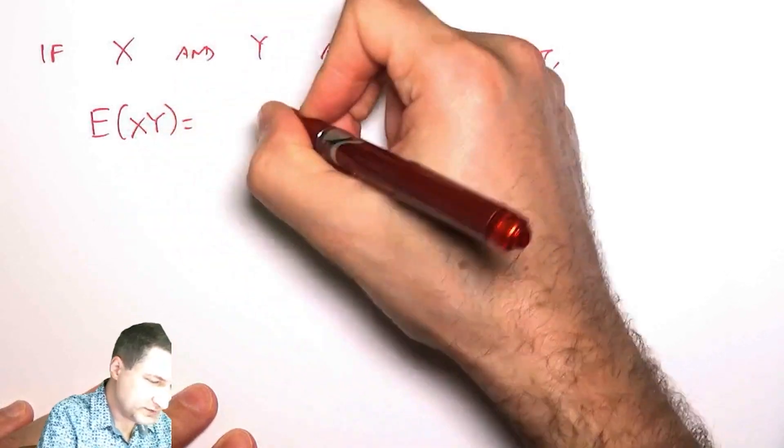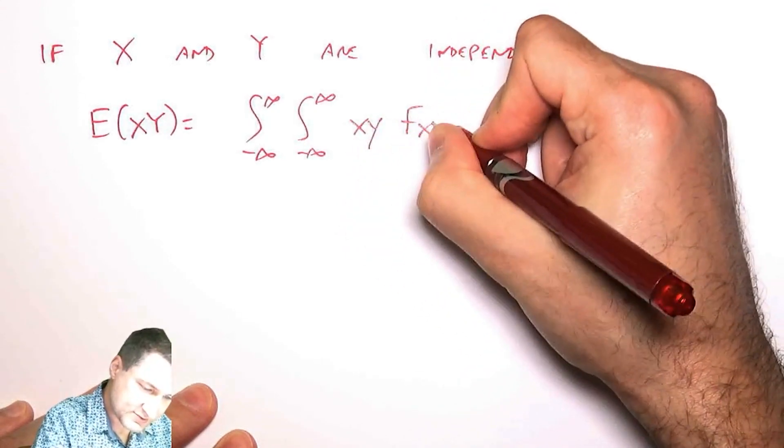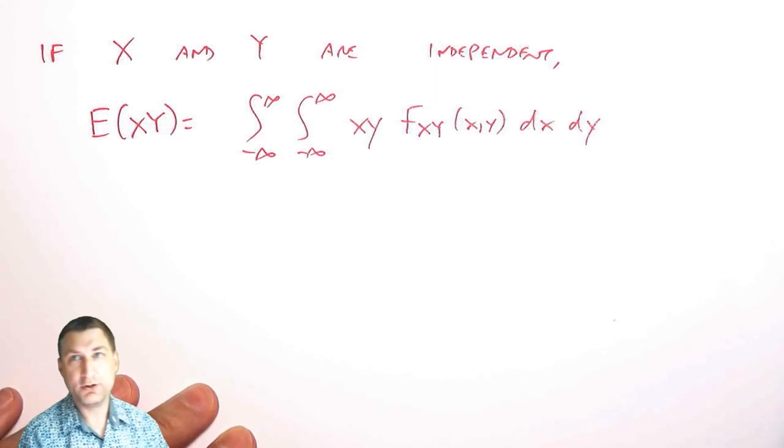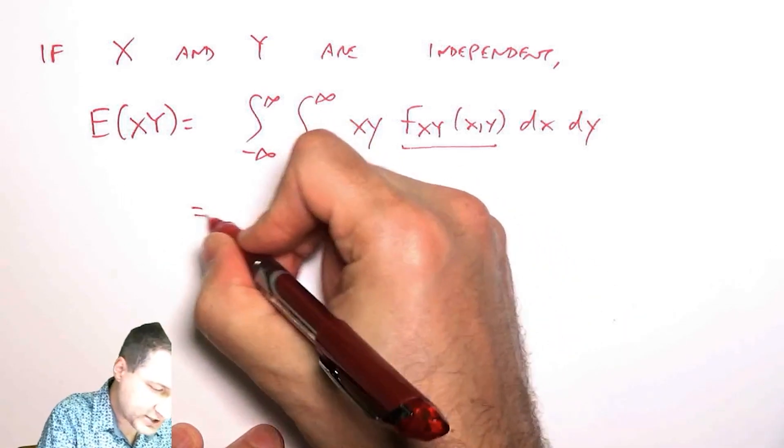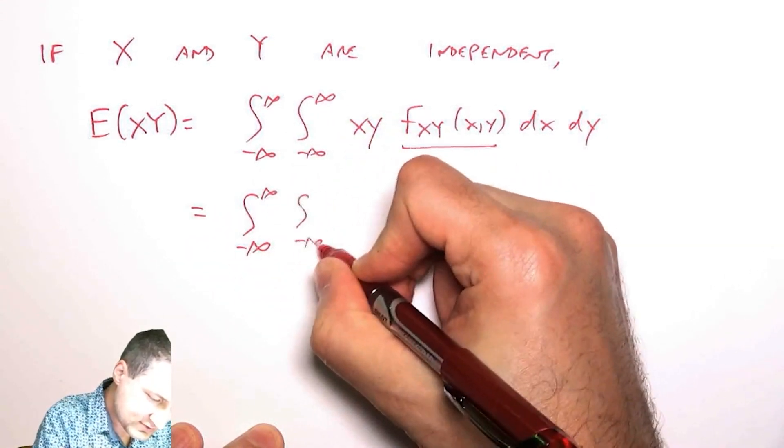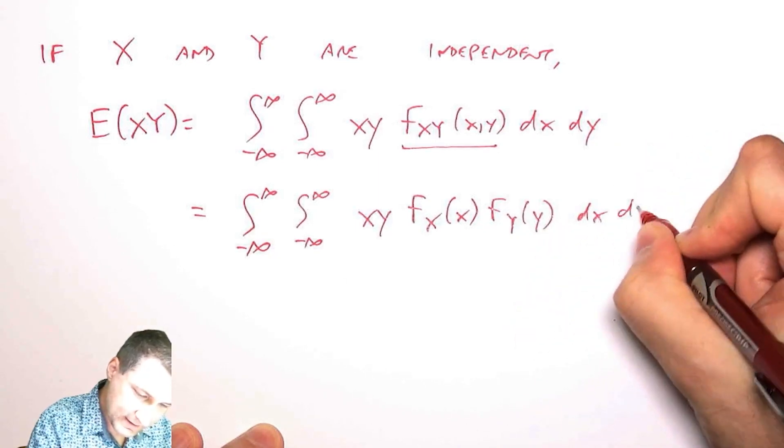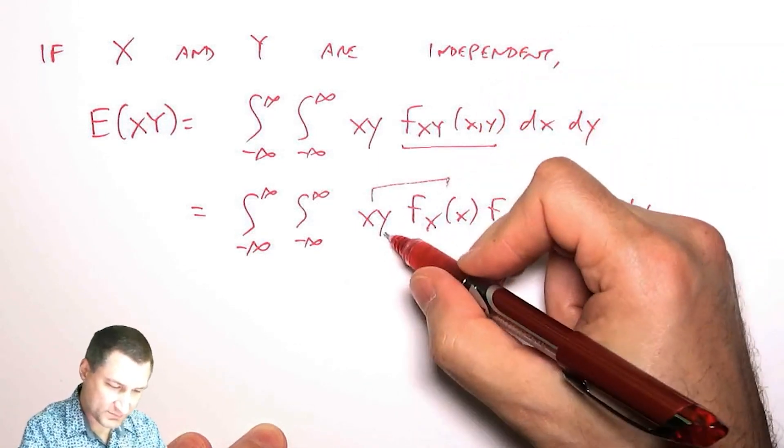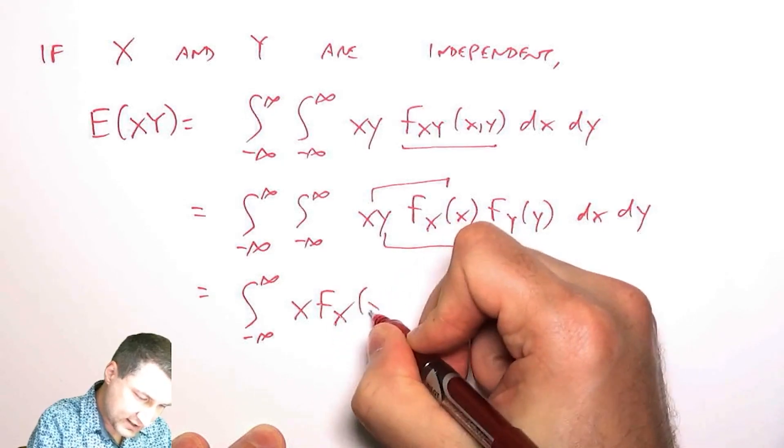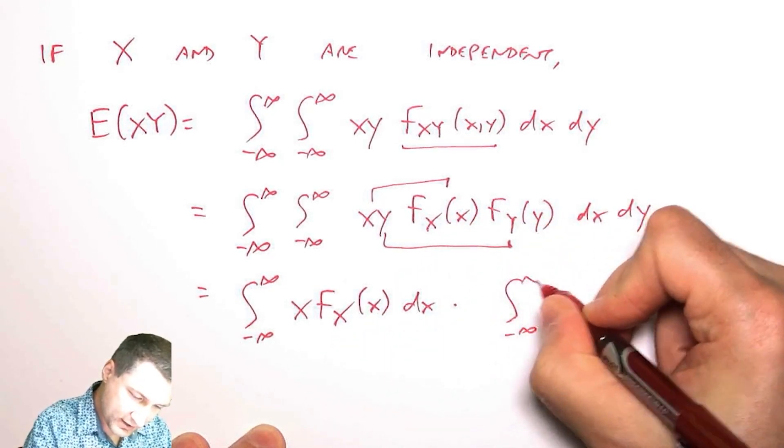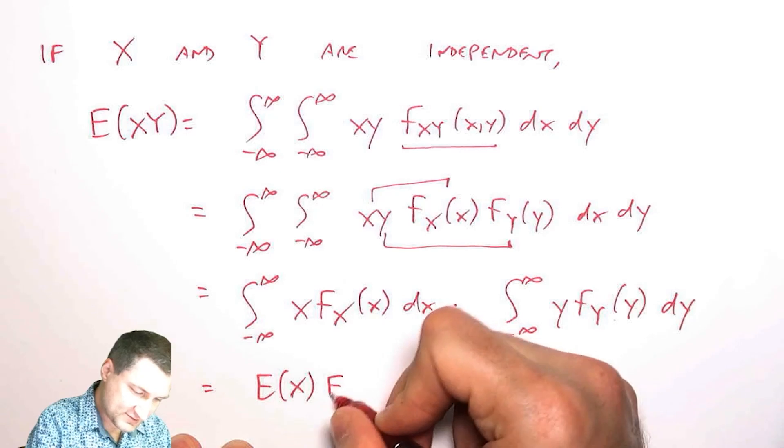The expected value of X, Y would be equal to this integral, X, Y times the joint. Now we know that independence means that I can decouple the joint into the product of the two marginals. So what I actually have is X, Y times this marginal times this marginal dxdy. And now I can see that I've got basically an X part and a Y part. And if I write it in that way, I can take the X part out and do that dx. And I can take the Y part out and do that dy. And this is just the expected value of X times the expected value of Y.